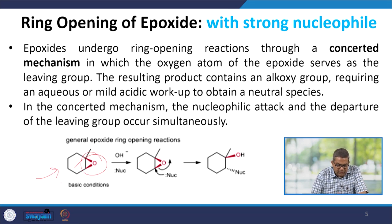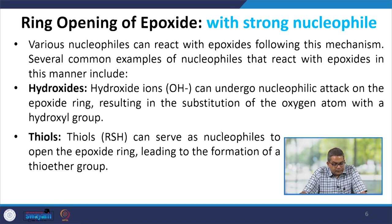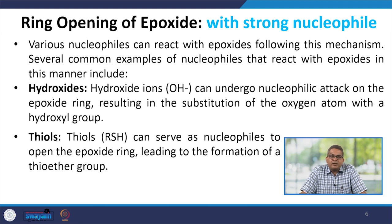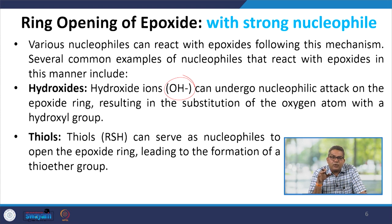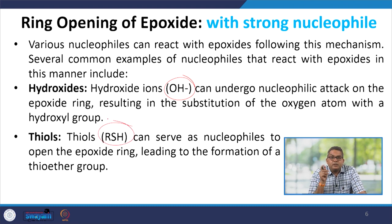Under basic conditions, the ring opening takes place. Various nucleophiles can react with epoxides following this mechanism. Common examples include hydroxides: the hydroxide ion OH⁻ can undergo nucleophilic attack on the epoxide ring, resulting in substitution of the oxygen atom with a hydroxyl group. Thiols, sometimes referred to as RSH, can serve as nucleophiles to open the epoxide ring, leading to the formation of a thioether group.